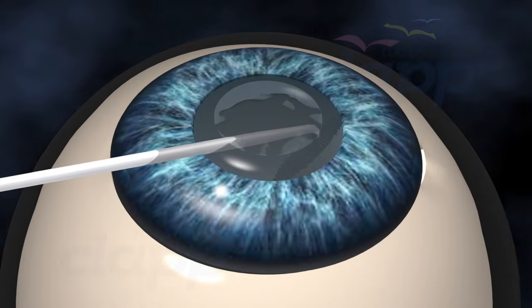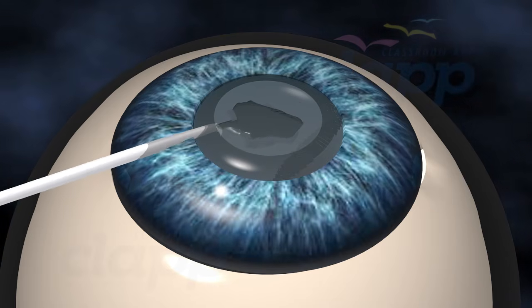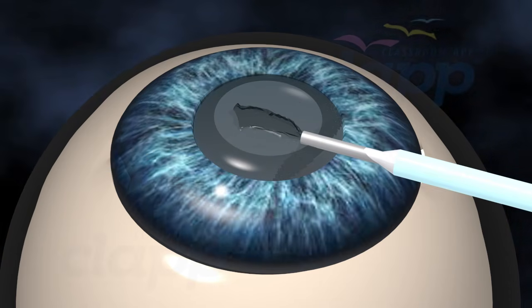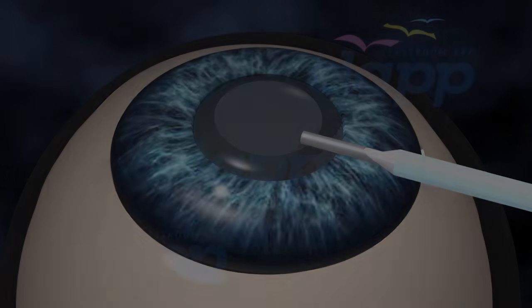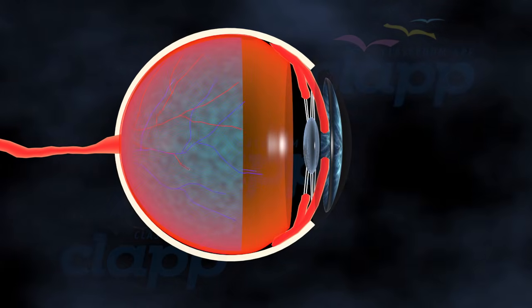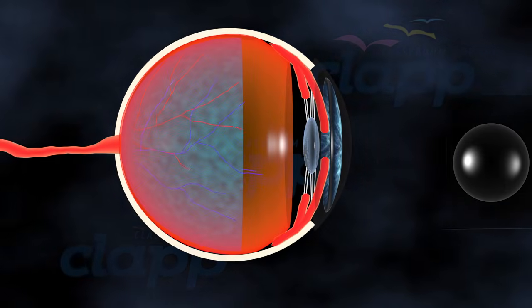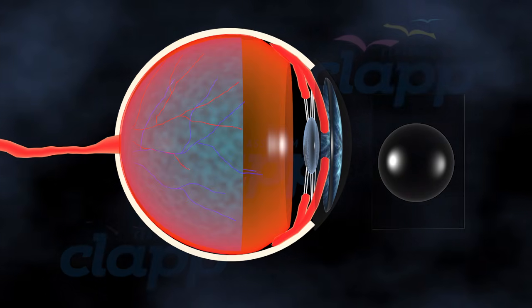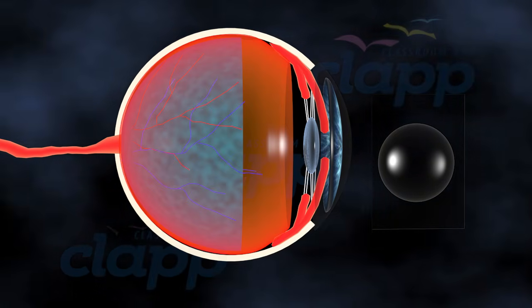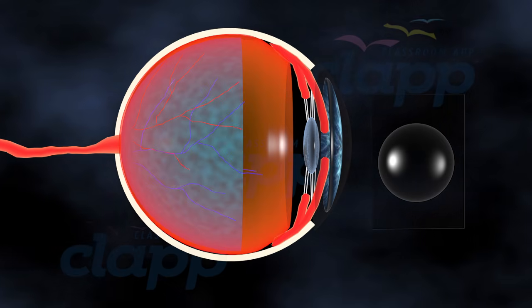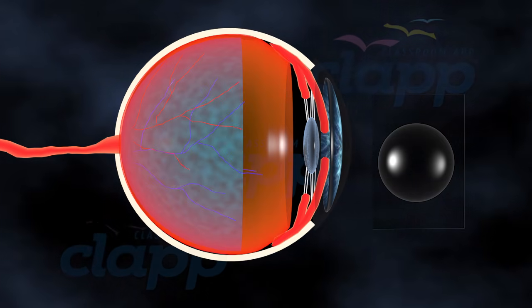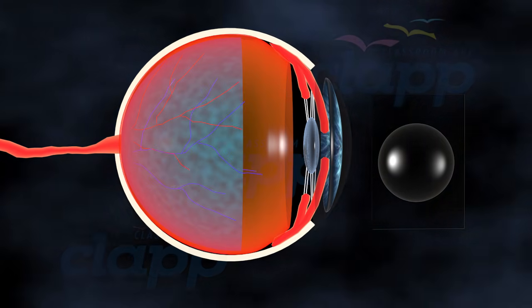When cataracts significantly impact your vision and daily activities, cataract surgery becomes an option. During the surgery, the cloudy lens is removed and replaced with an artificial lens called an intraocular lens, or IOL, restoring clear vision. It's one of the most common and successful surgeries performed worldwide.